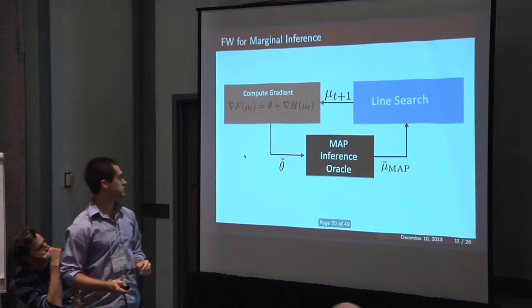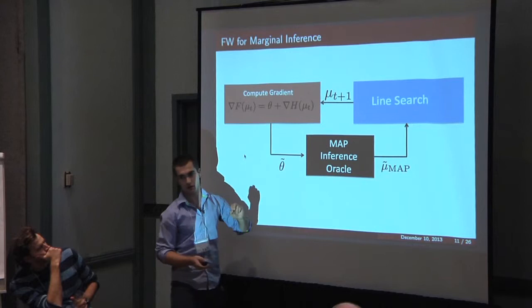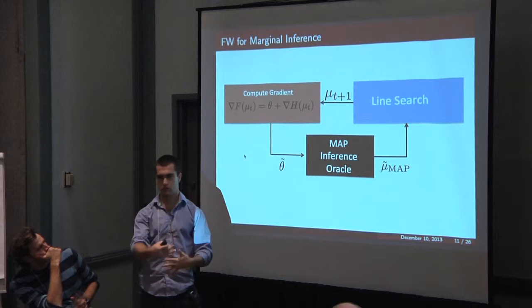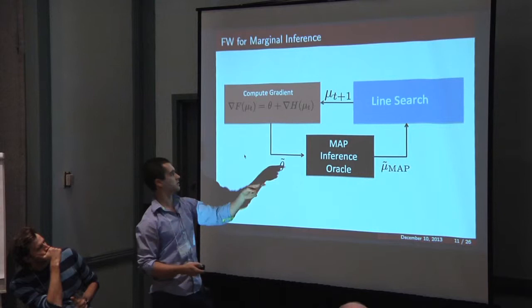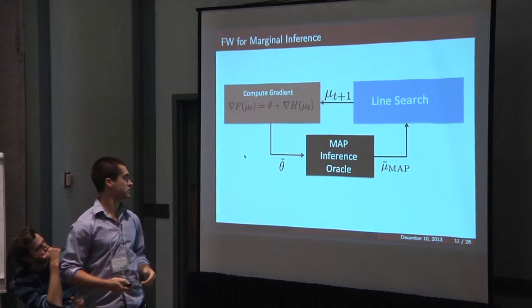In terms of my terminology, you basically have some theta of your graphical model, but you're doing MAP inference with some theta tilde, which is basically some transformed theta. This returns a MAP solution, and then you go around and around. So basically your approximated marginals are some convex combination of MAP solutions.